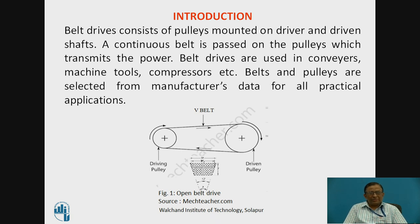As you know, belt drives consist of pulleys mounted on driver and driven shafts, and a continuous belt passed on the pulleys which transmits the power. Belt drives are extensively used in industrial applications such as conveyors, machine tools, compressors, etc. Belts and pulleys being standard mechanical elements, they are required to be selected from manufacturer's data for all practical applications.